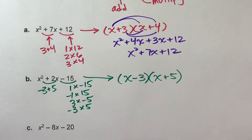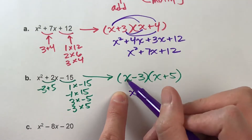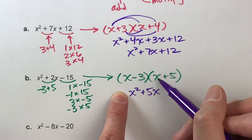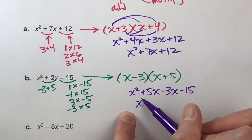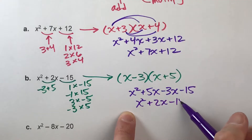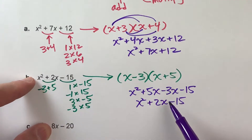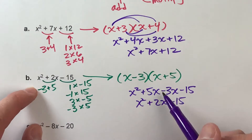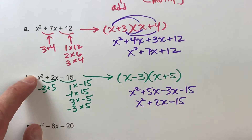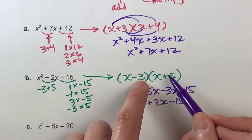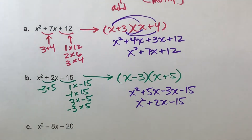If you want to double check, just multiply it out. x times x is x squared, x times 5 is 5x, negative 3 times x is negative 3x, negative 3 times 5 is negative 15 — which simplifies to x squared plus 2x minus 15. The more you multiply this out, the more you understand why the trick works: the x terms add together to get the middle coefficient, and the constants multiply to get the last number.